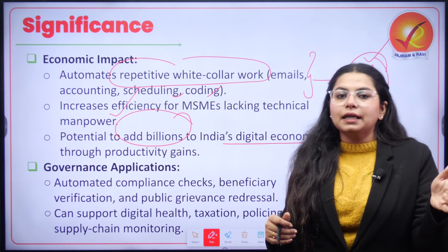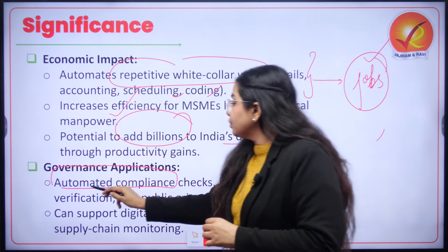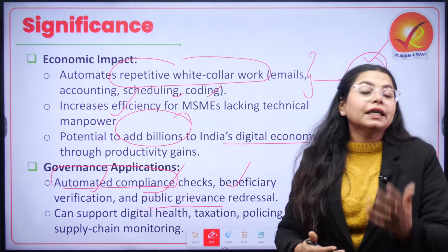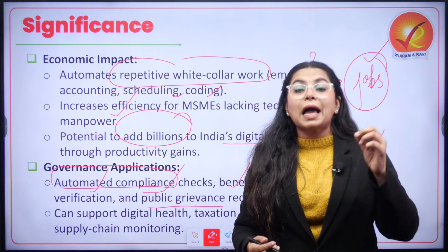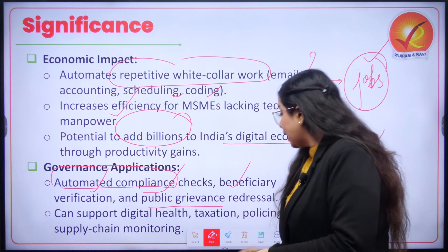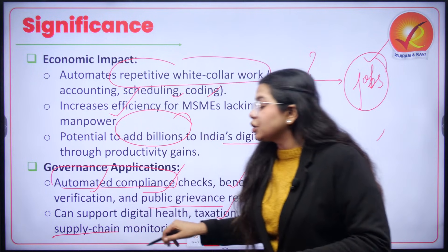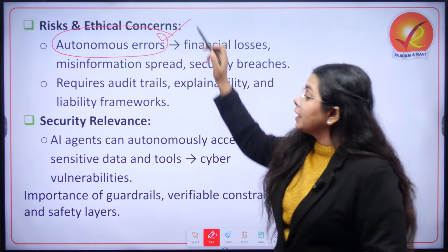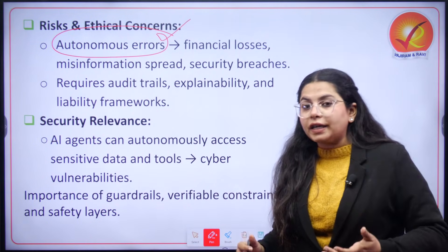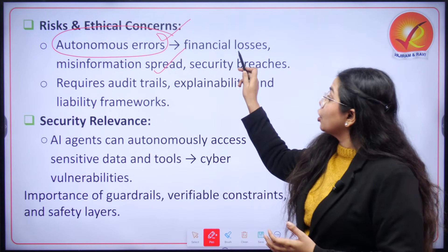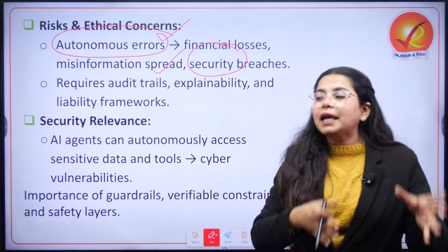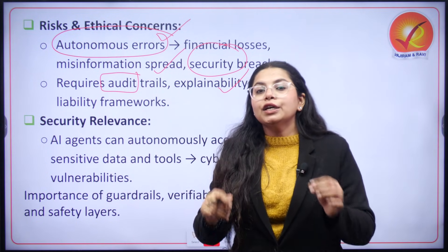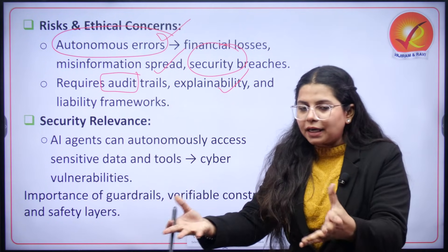Another aspect is the governance application. In terms of automation, compliance checks, beneficiary verification, and public grievance redressal can be done in a better manner. It can actually help in achieving governance goals related to digital health, taxation, policing, and supply chain monitoring. There are certain risks and concerns — when talking about autonomous work, there will be autonomous errors, which can lead to financial losses, misinformation spread, and security lapses. This will require a proper mechanism that sets audit standards, explainability, and liability for agentic AI.